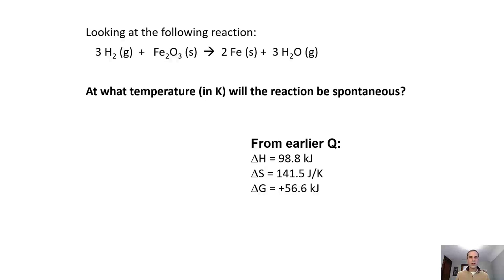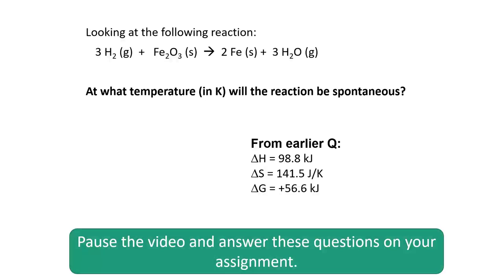Now we might be curious at what temperature this becomes spontaneous, because we know the entropy change is favorable. If we increase the temperature, eventually the minus T times delta S term should become larger than the delta H component, driving the overall delta G negative. So pause the video and try to answer that question.